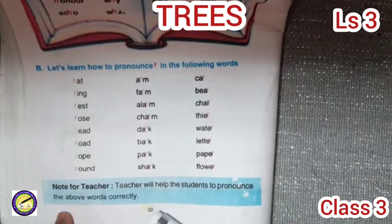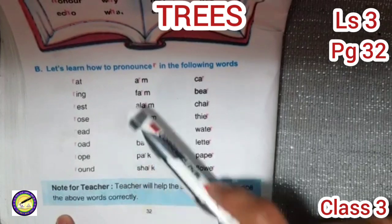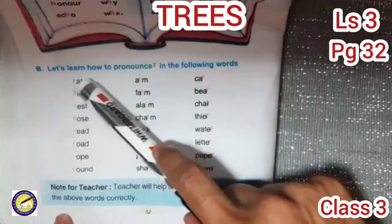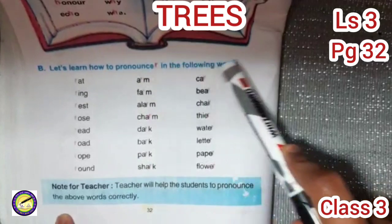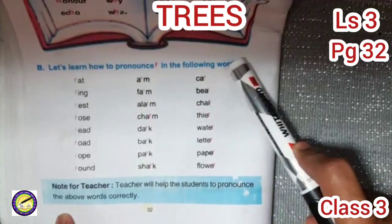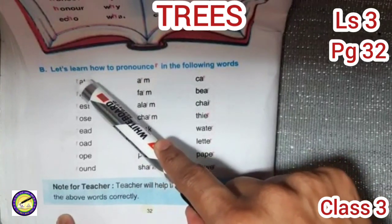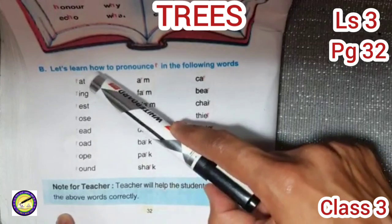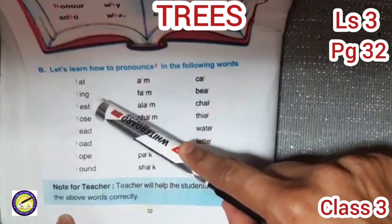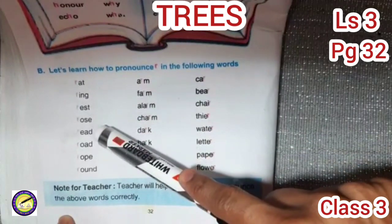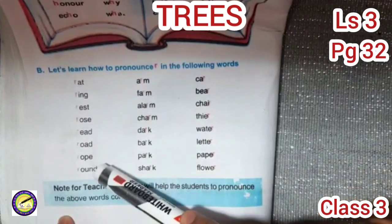On page number 32, there is again reading practice. Let us learn how to pronounce R in different positions. When R comes in the beginning, it gives the sound of R — like rat, ring, rest, rose, reed, road, rope, and round.